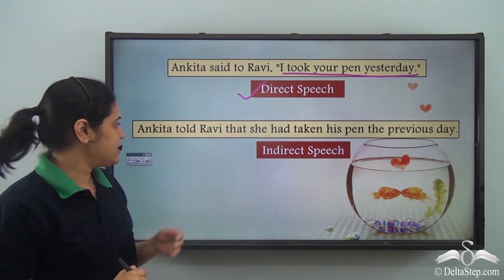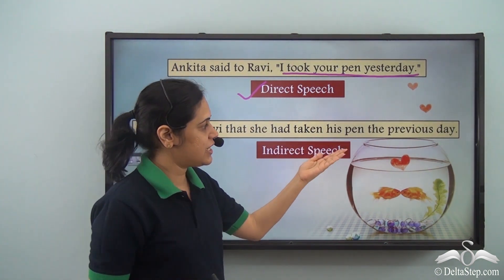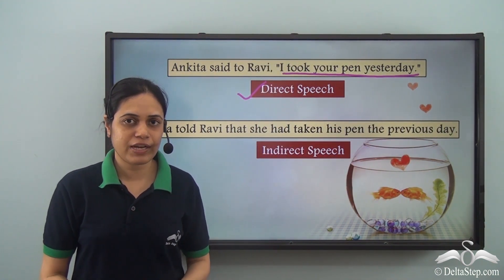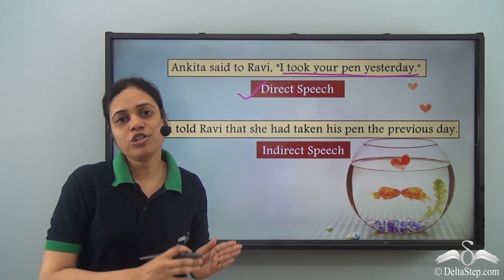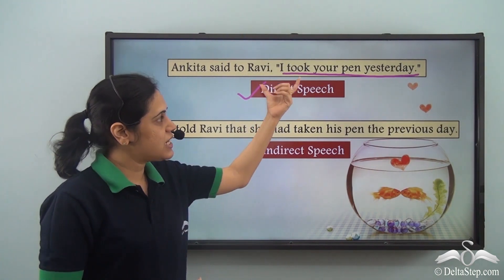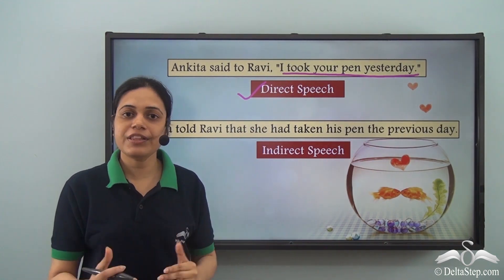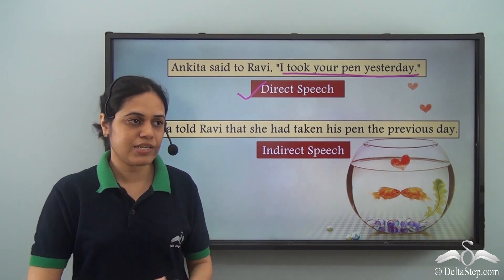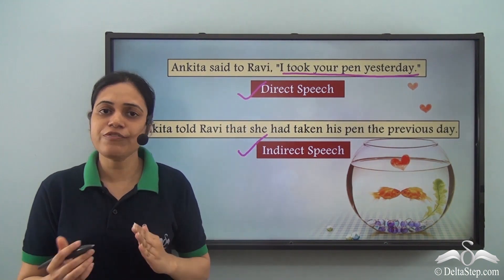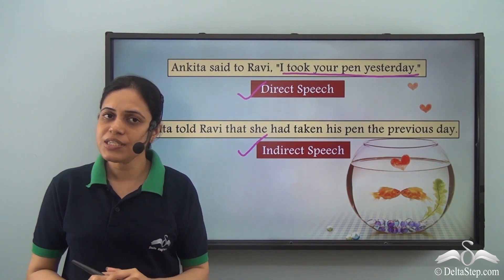Whereas in this sentence: Ankita told Ravi that she had taken his pen the previous day. So we are not directly quoting the words of Ankita. We are not using the exact words of the speaker. We are stating what the speaker said in some other words without changing the meaning of the sentence. This is indirect speech. So both are ways of reporting — this is direct speech, this is indirect speech.